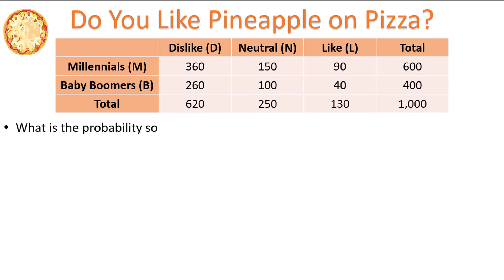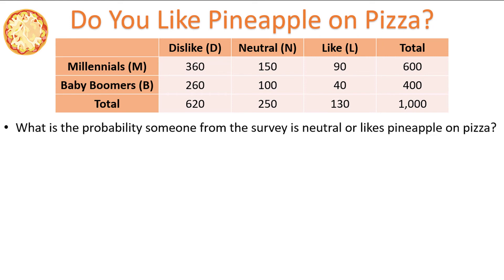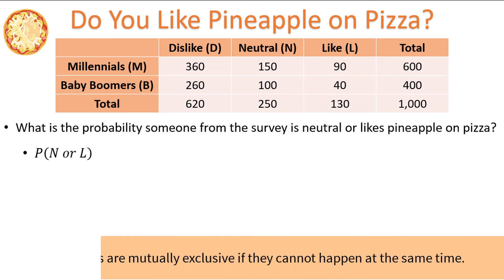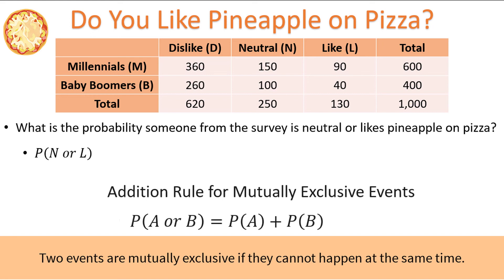How about the probability someone from the survey is either neutral or likes pineapple on pizza? This is an OR type probability, meaning we must ask the question whether or not the two events are mutually exclusive. Two events are mutually exclusive if they cannot happen at the same time. An individual cannot be both neutral and like pineapple on pizza at the same time, so these two events are mutually exclusive, meaning we can use the addition rule for mutually exclusive events. Applied to the letters N and L, the addition rule becomes: the probability of N or L equals the probability of N plus the probability of L.